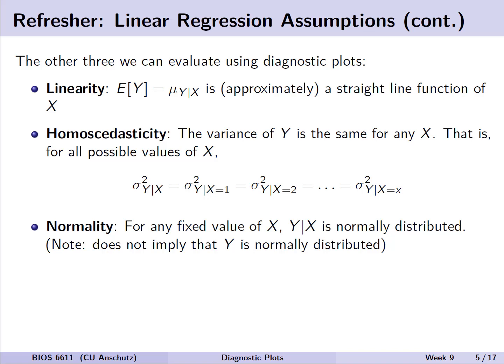We have that assumption of linearity, where the expected value of y is equal to mu of y given x, and the assumption there is that it's approximately going to be a straight line function of our predictor x in simple linear regression. We also have that assumption of homoscedasticity, or equality of our variances, so that the variance of y will be the same for any given value of x we choose, out of our possible domain or range in our sample.